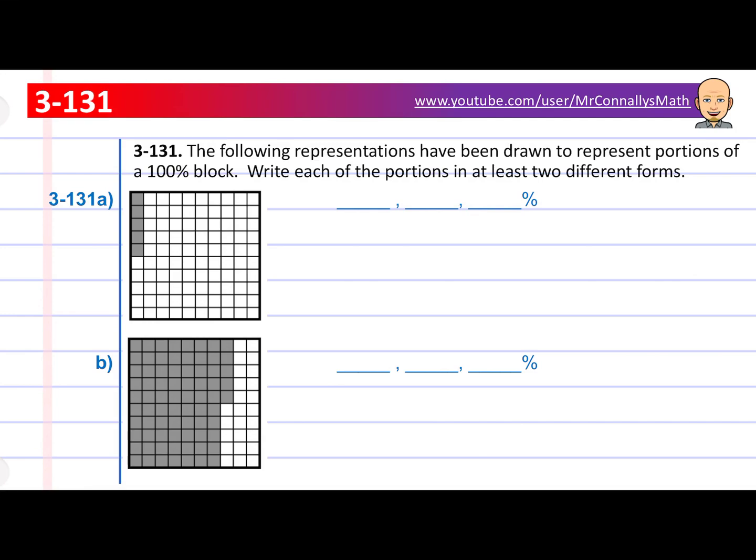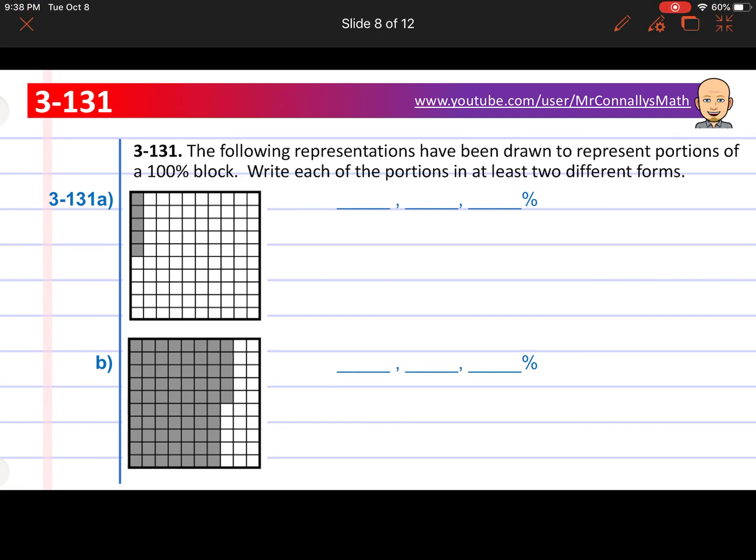131. The following representations have been drawn to represent portions of a 100% block. Write each of the portions in at least two different forms. So I'll write one of them. You can write the other two. So we're looking at this. We know there's 100 blocks. And 1, 2, 3, 4, 5 of them are colored in. So that's actually 5 out of 100. I'm going to leave it at that because then it's easy for you to find the decimal and then the percent. And go ahead and put those in there. Decimal, then percent.